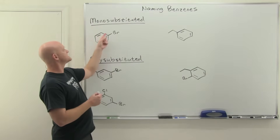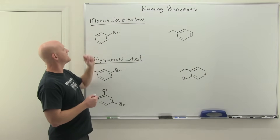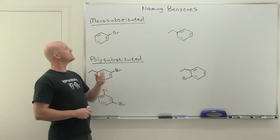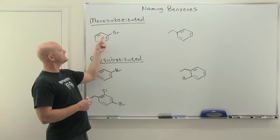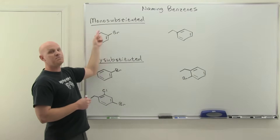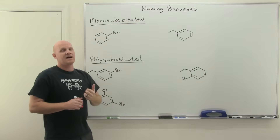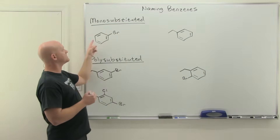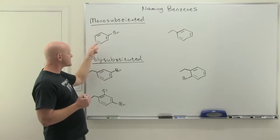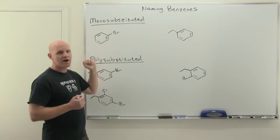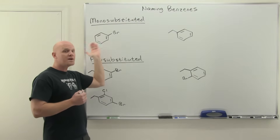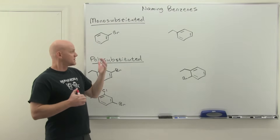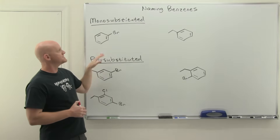This little six-membered ring here looks like it has alternating single and double bonds — that is benzene. It actually doesn't have alternating single and double bonds; there are actually delocalized electrons all the way around. This is one of the resonance structures, so just one thing to keep in mind.